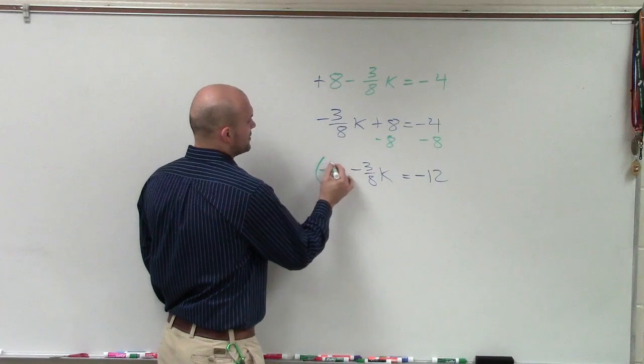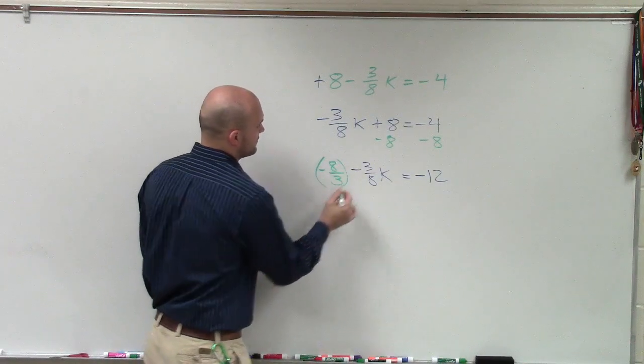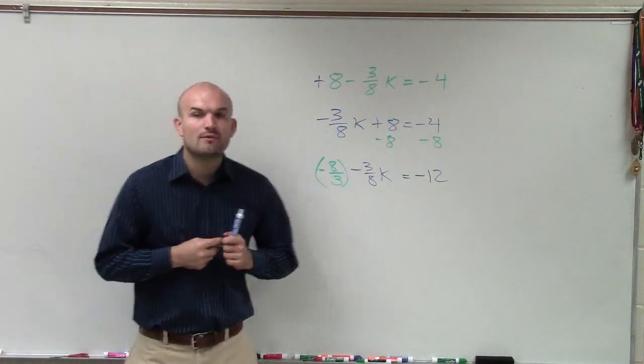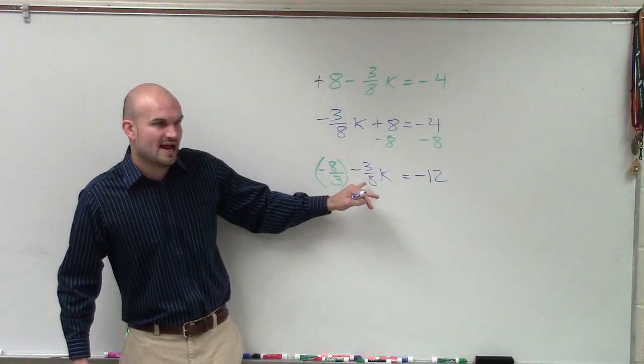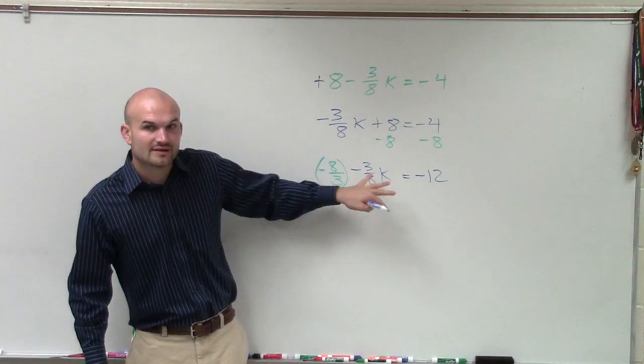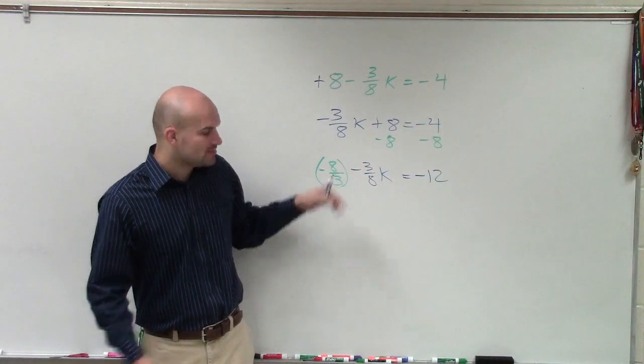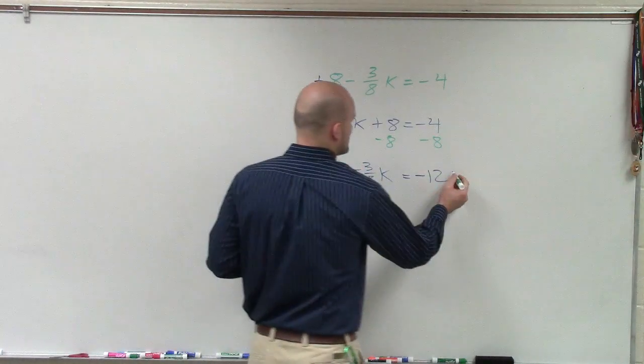And what I'm also going to do is I'm going to make that reciprocal negative. The reason why I want to make this negative is because if I just multiply by 8/3, I'm going to have a negative k. And I don't want to solve for negative k. I want to solve for k. So I'm going to multiply by a negative fraction on both sides.